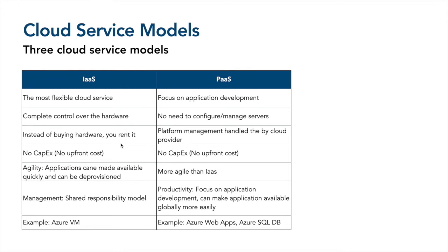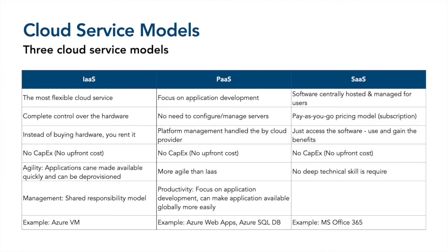The next service model is Platform as a Service (PaaS). If you don't want to configure and manage servers and virtual machines, you can go with PaaS and focus more on your application development. There is no need to configure or manage servers — all of that is taken care of by your cloud provider. There is no CapEx, and it is more agile than IaaS. You just develop your application and deploy it. Examples are Azure Web Apps and Azure SQL DB.